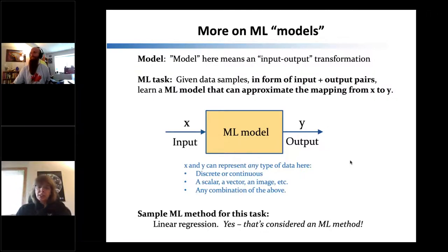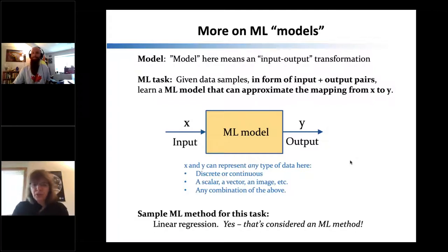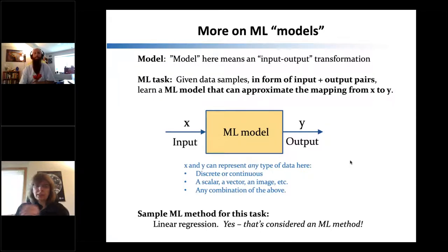Linear regression is actually considered a machine learning method. So if you know linear regression, you already know a machine learning method. It's probably the simplest one there is, but since it satisfies the definition of machine learning models, it is one of them.